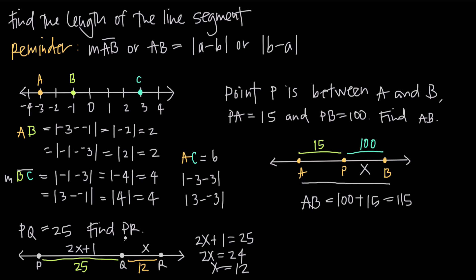Now we want to find PR, the distance between P and R. By the segment addition postulate, PR is equal to PQ plus QR, which is 25 plus 12 — giving a total of 37. So the length of the line segment PR, which we can write as PR or as the measure of the line segment PR, is going to be equal to 37.